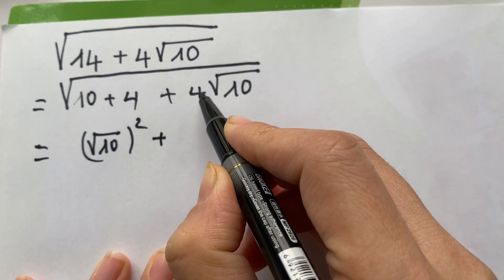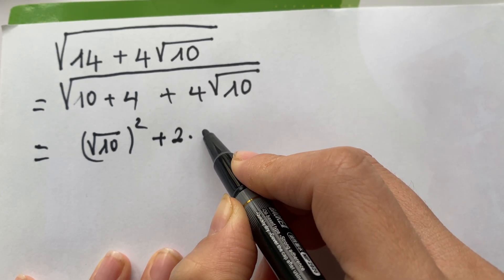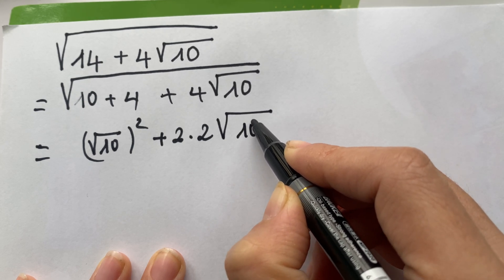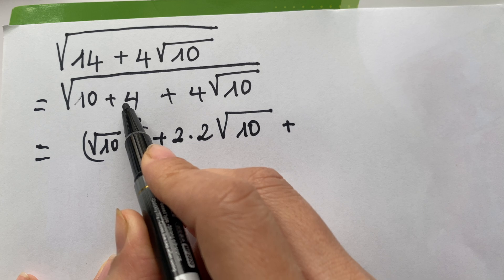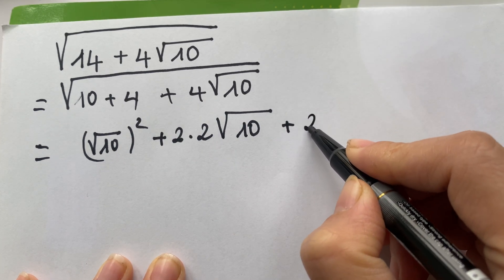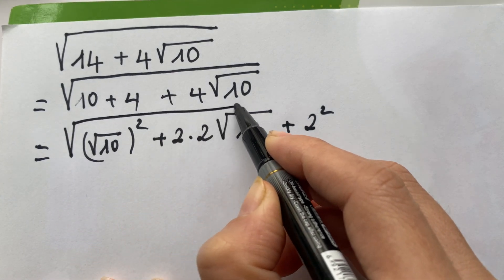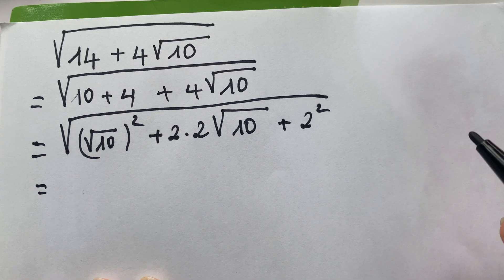Plus you see 2 times 2 times 2 square root of square root of 10. You can see 4 equals is the same as 2 square.